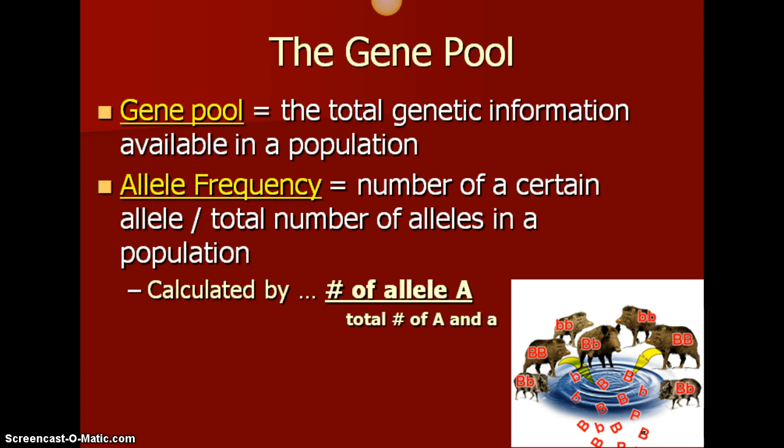A few more terms: Gene pool is the total genetic information available in the population. Looking at all of your organisms in the picture below — all of the organisms in your particular population — you're looking at the traits they have to pass on. Allele frequency is the number of a certain allele, whether it's big B or little b, dominant or recessive, divided by the total number of alleles in the population. The equation is the number of a given allele (big A) divided by the total number of big A and little a combined.